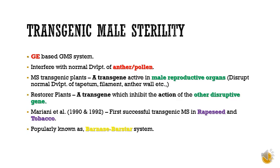In short, it interferes with the transgene which causes male sterility. This system was first given by Mariani and his lab during 1990 and 1992, and was successfully demonstrated in rapeseed and tobacco. This system is also popularly known as the Barnase and Barstar system.